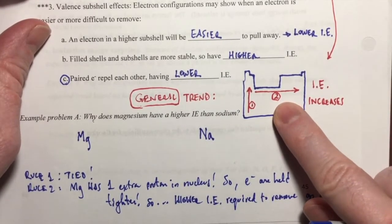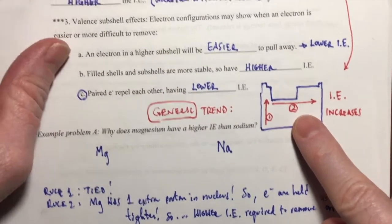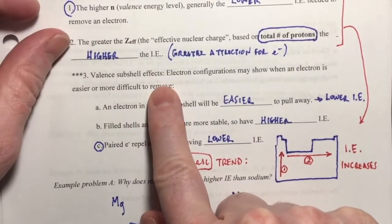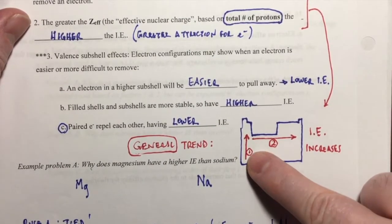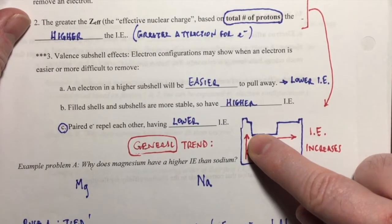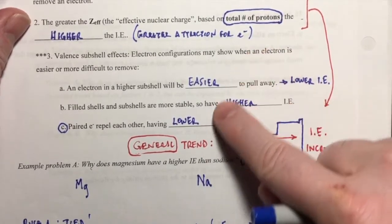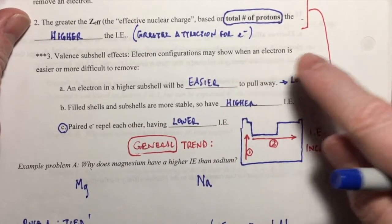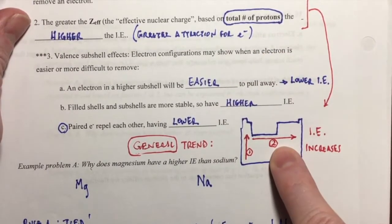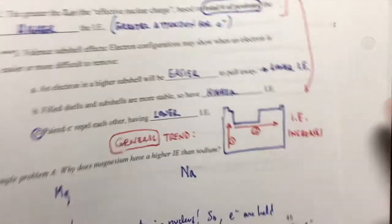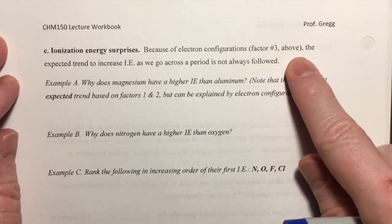The surprises or exceptions come in when rule two is overruled, and it's overruled by rule three — the valence subshell effects we talked about in the previous video. Rule one always wins; that trend is always maintained — ionization energy always increases as you go up a group. But rule two can sometimes be overruled by effects due to the valence subshell electron configurations, and we're going to see how these valence subshell effects can sometimes overrule the general trend expected from rule two.